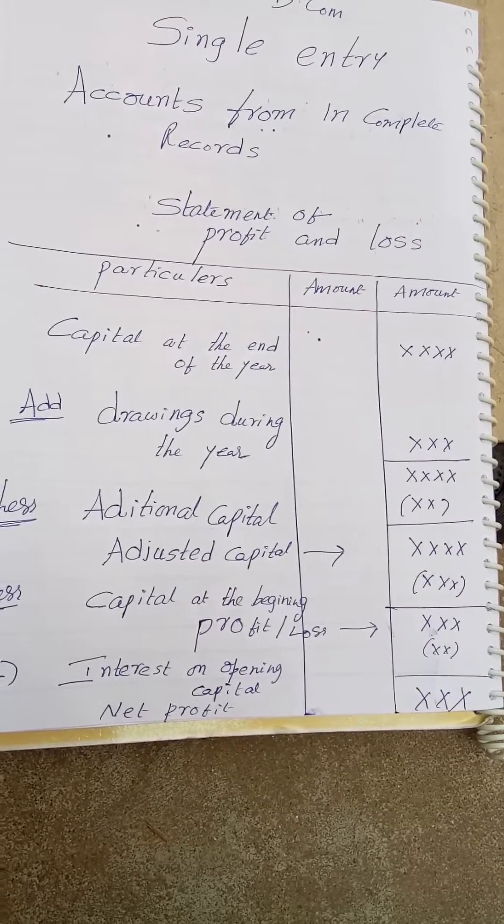You will get additional capital. From there, you have to deduct capital at the beginning. You will get the profit. If any interest on capital is given, you have to calculate always on opening capital.